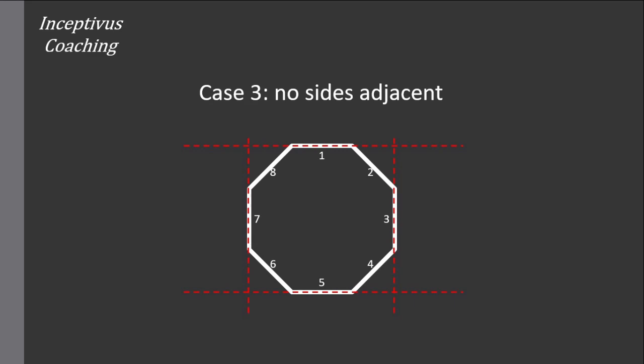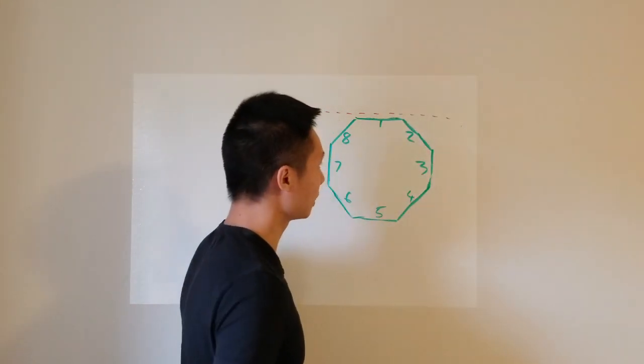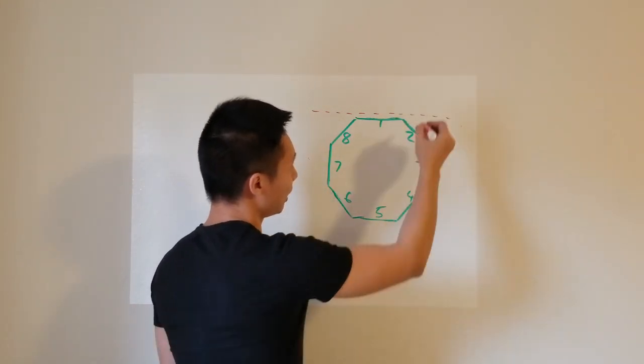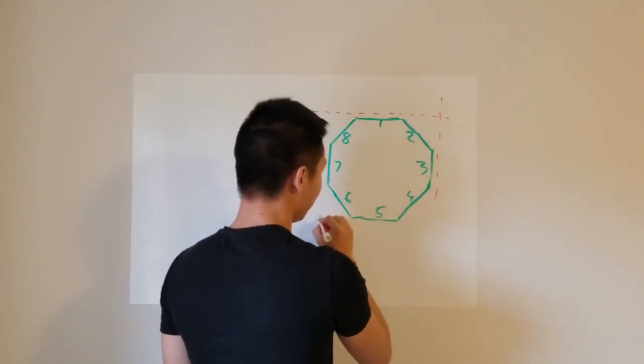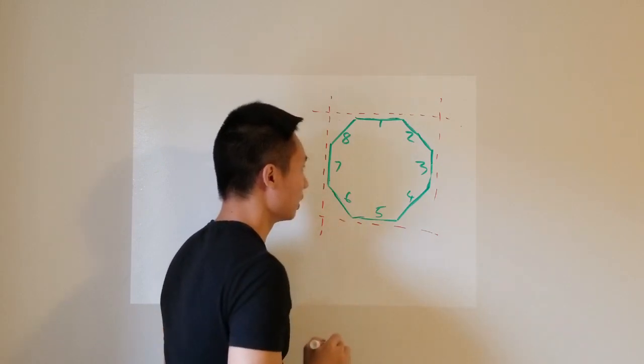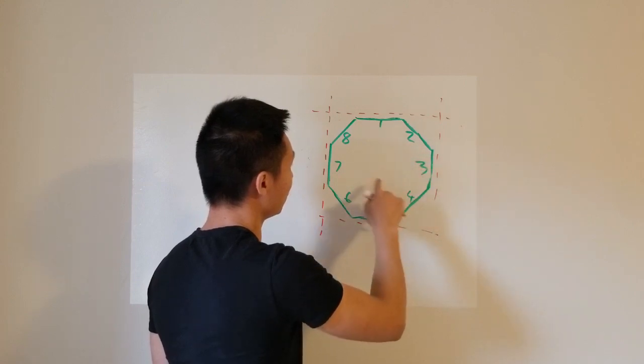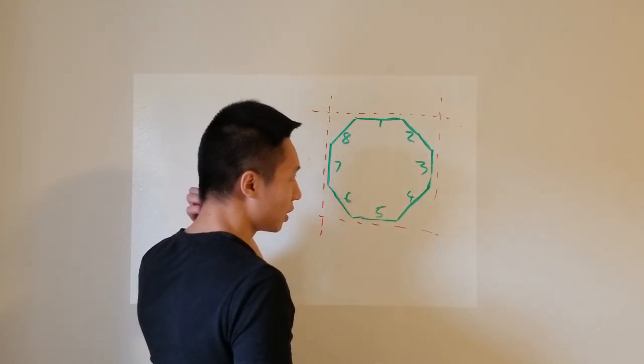Now, let's consider the third case when you allow no sides to be together. So suppose I choose one side, number 1 is chosen. Then you have no choice because I really only have 1, 3, 5, and 7. How many times can I rotate this around the clock? Well, sure, I can try 2, 4, 6, 8. So that's the second way.